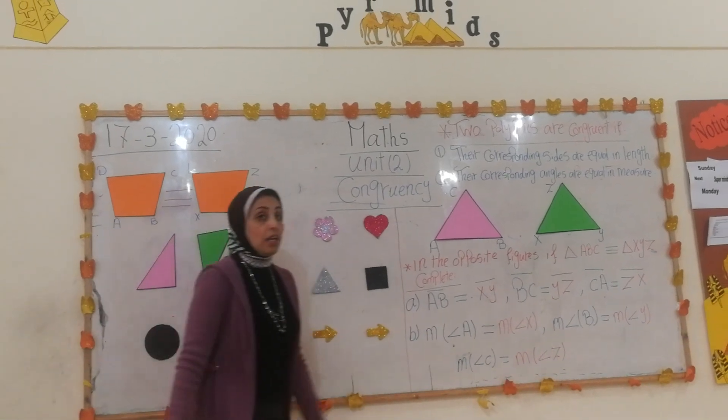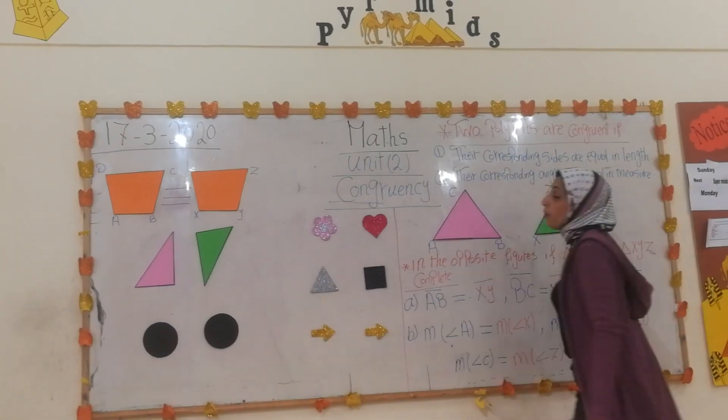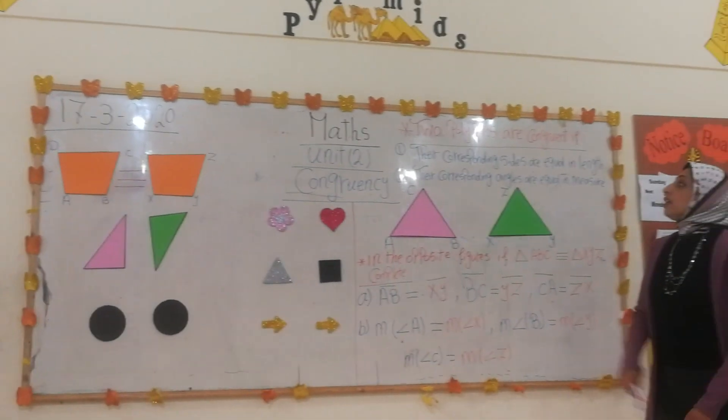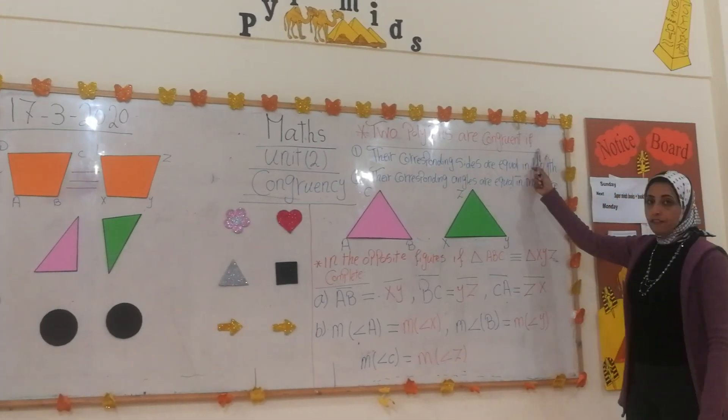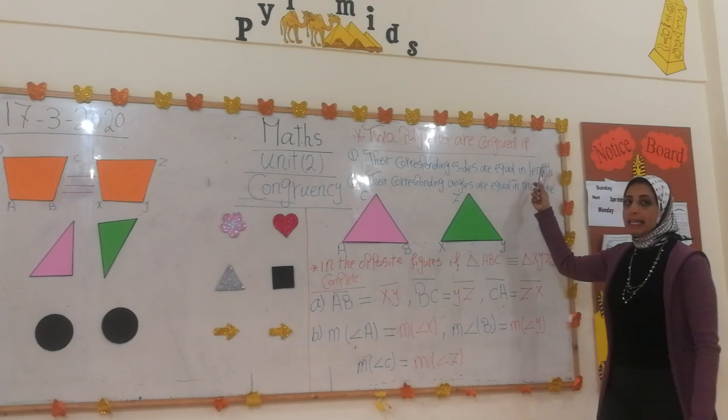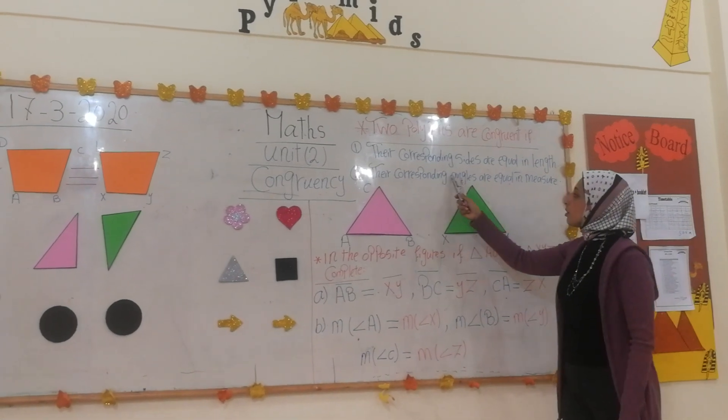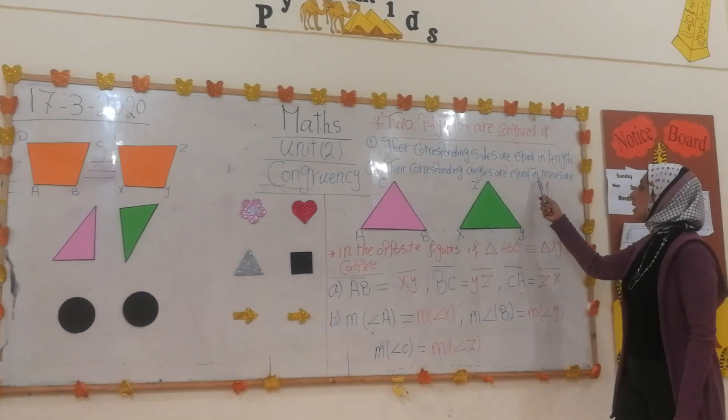Let's take congruency. We have two conditions for polygons to be congruent. Two polygons are congruent if their corresponding sides are equal in length and their corresponding angles are equal in measure.